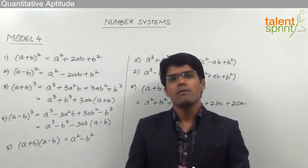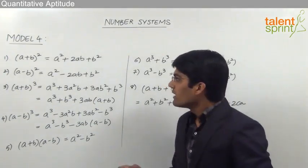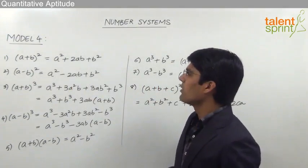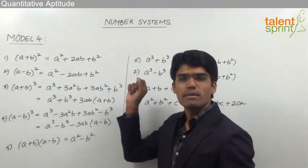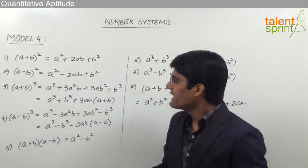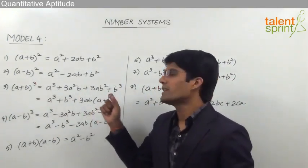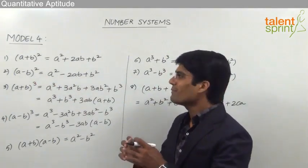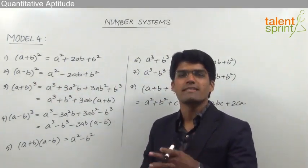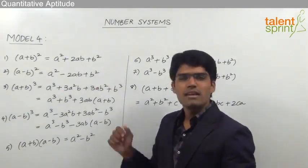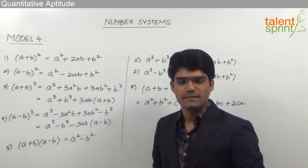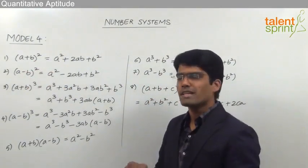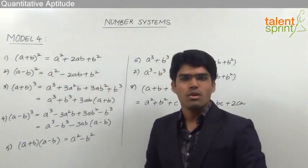The first formula is (a + b)² = a² + 2ab + b². Next is (a - b)² = a² - 2ab + b². That means when (a + b)² or (a - b)² is expanded, the product obtained will be as shown on the right hand side.